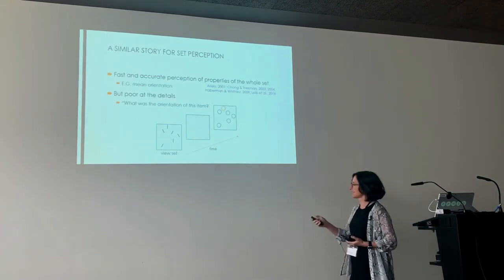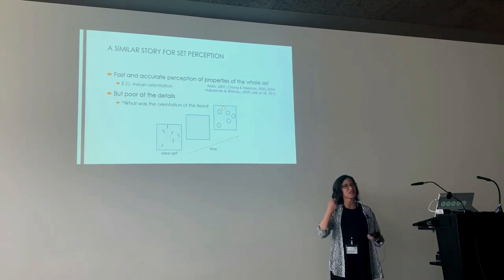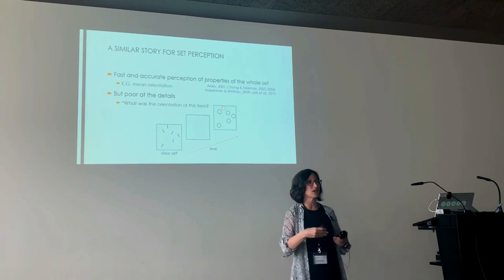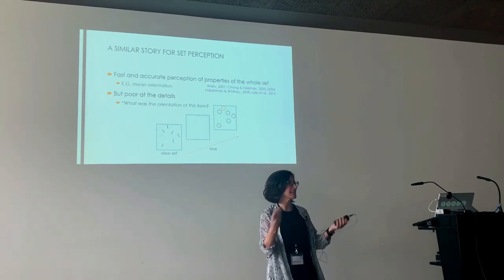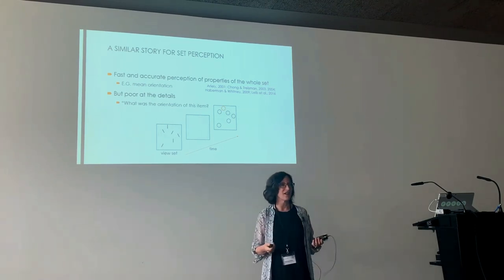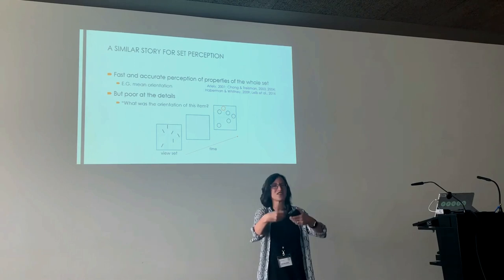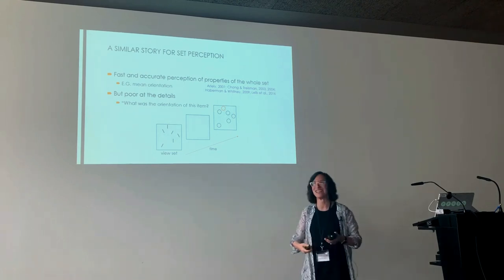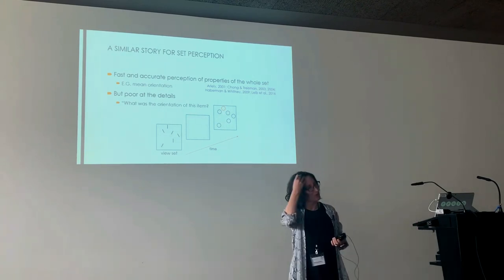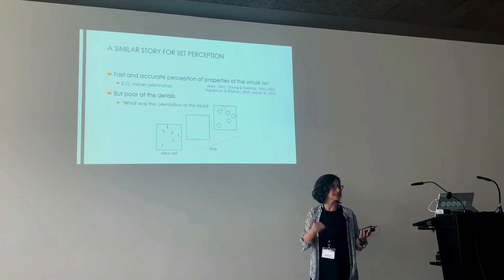There are similar stories from set perception experiments: you're shown a whole set of items, then they're taken away, and you're asked things like what's the mean orientation, or which set is tilted more to the left. People are actually quite good at this, even for fairly high-level processing like mean facial expression. But if you ask about a particular item in the set, people are quite poor — again suggesting you have some rich perception of the whole, but you're bad at the details.